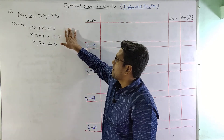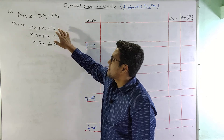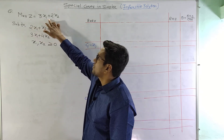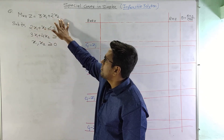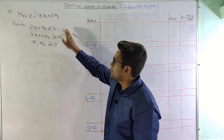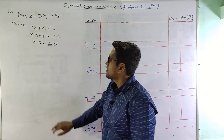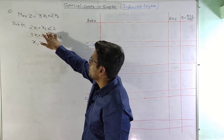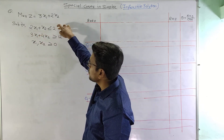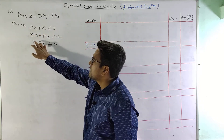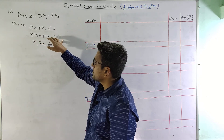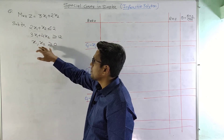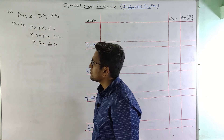Our problem is given as: maximize Z equals 3x1 plus x2, subject to constraints 2x1 plus x2 less than or equal to 2, and 3x1 plus 4x2 greater than or equal to 12, with x1, x2 greater than or equal to 0.